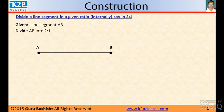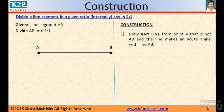The first thing is to divide a line segment in a given ratio internally. Say the ratio is 2:1. So one line AB is given and we have to divide it into 2:1. The construction step 1: draw any line from point A that is not AB and the line makes an acute angle with line AB.